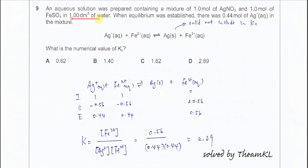Both put in 1 dm³ of water. Let them react and reach equilibrium. There was 0.44 mole of silver ion.